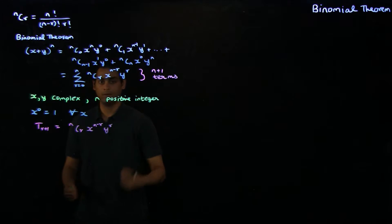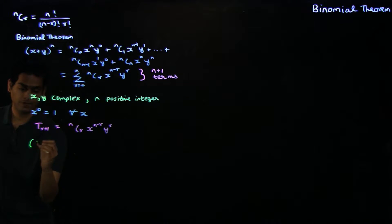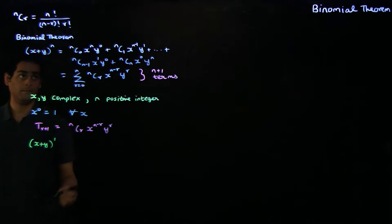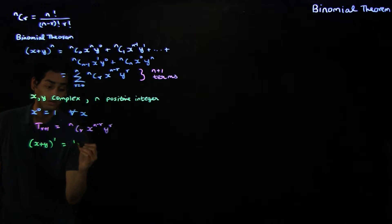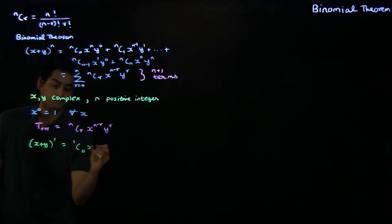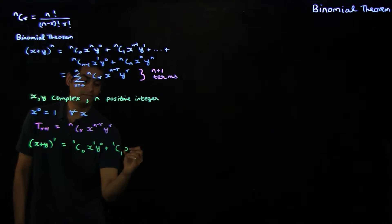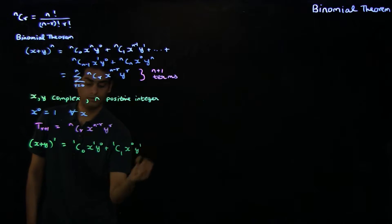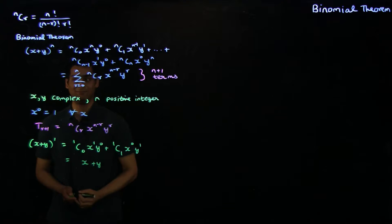To give you an example of the application of the binomial theorem, let's look at x plus y to the power 1. From the binomial theorem, we get that this is nothing but 1C0 times x to the power 1 times y to the power 0, plus 1C1 times x to the power 0 times y to the power 1, which gives us x plus y, which is what we expect.